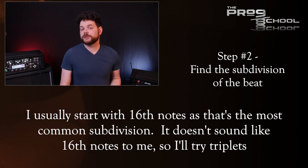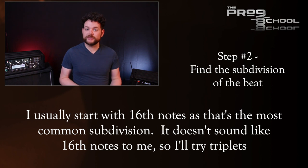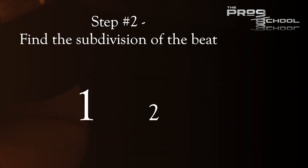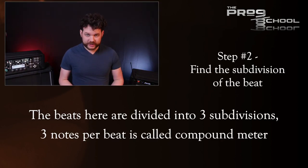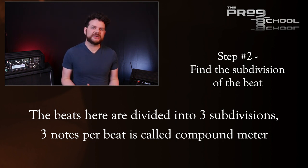From here I'm going to figure out the subdivision of the beats, or how many notes are happening within each beat. It doesn't sound like sixteenth notes to me, which would be the most common, so I'm going to try triplets, or three notes per beat. And that works perfectly. So what we have here is compound meter — compound meter meaning three notes per beat.